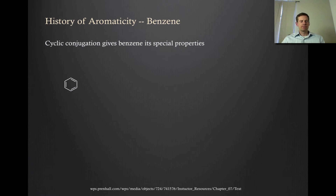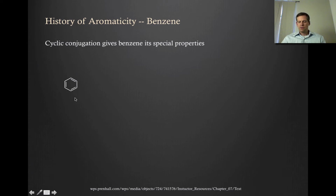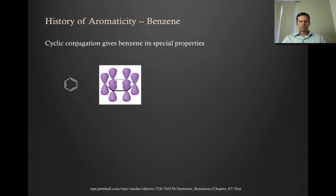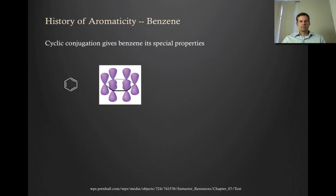So what is it instead? It turns out that the cyclic conjugation of benzene is what is responsible for the property of aromaticity, and it's what gives it its very special properties. If we think about what's happening from an orbital point of view rather than this two-dimensional Lewis structure — think about each carbon. Each carbon is sp2 hybridized, so every carbon has a p orbital, and they're all going to be aligned in the same way. Each carbon is donating a single electron to this cyclic conjugation.